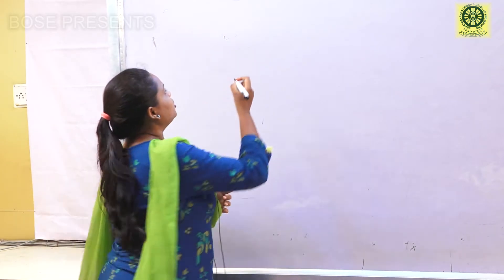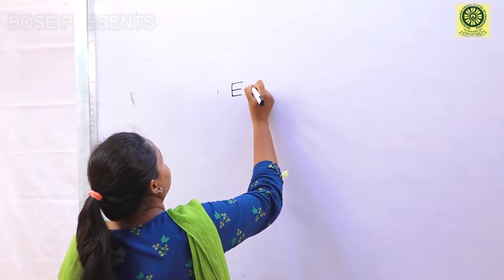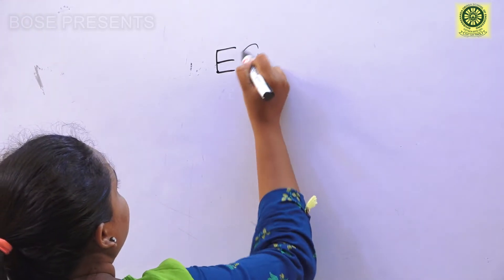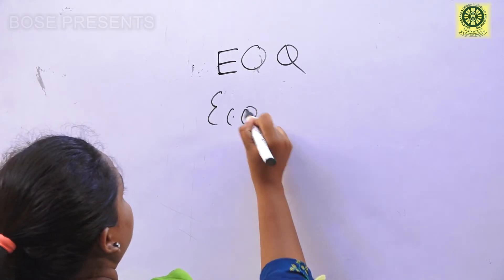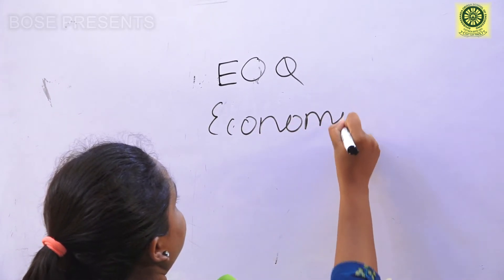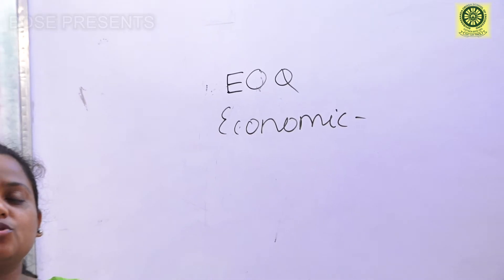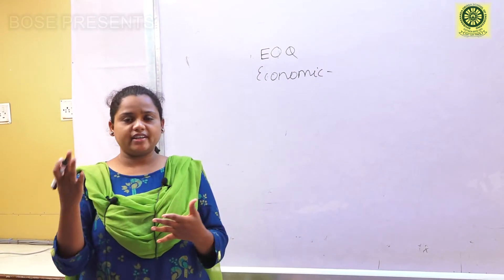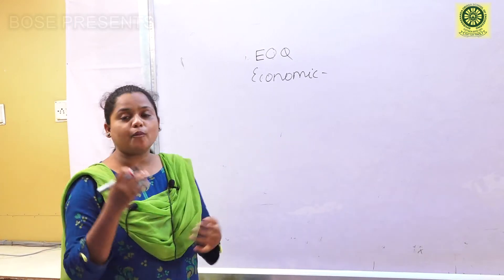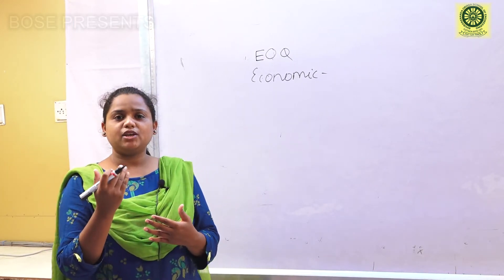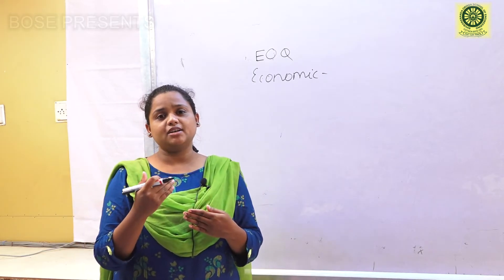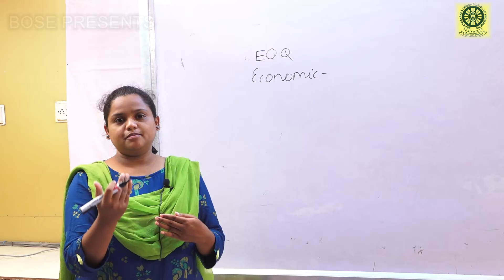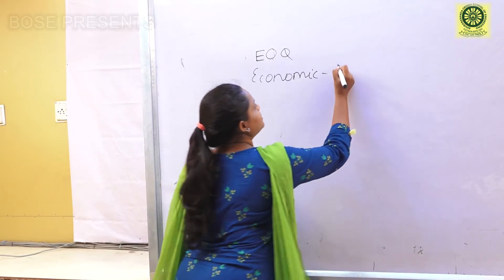Let's break down EOQ. What does 'Economic' mean? Economic means Optimal — that is, achieving an optimal quantity or optimal cost by using limited resources so that we can fulfill our goal. That is what 'Economic' means: Optimal.